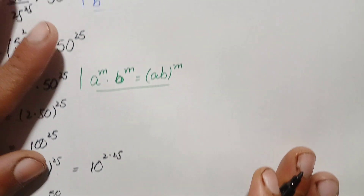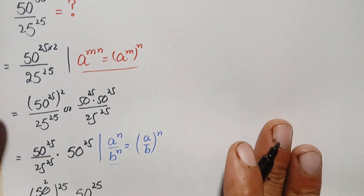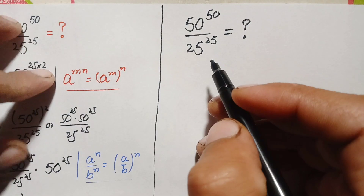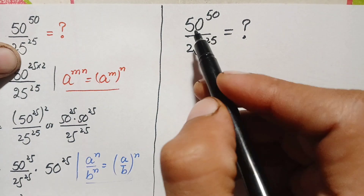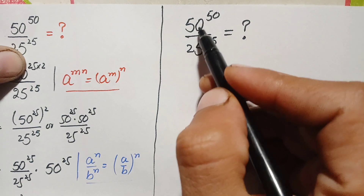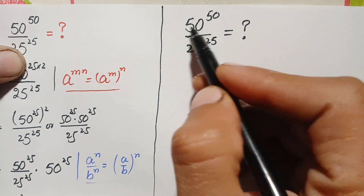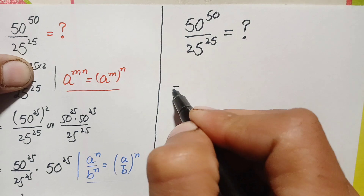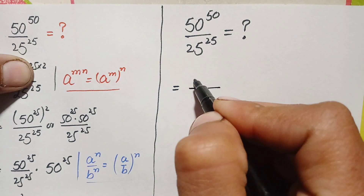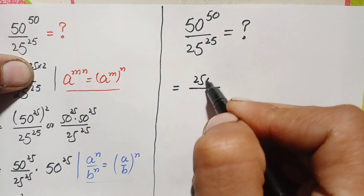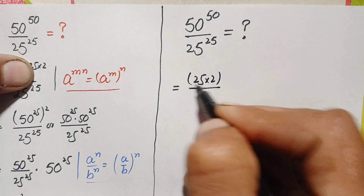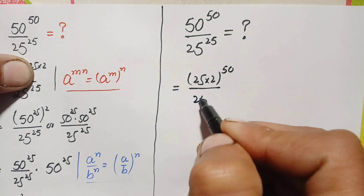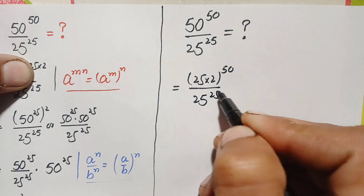Now we solve this problem using the second method. In the second method we will try to make the bases the same. For that we factorize the base 50 as 25 times 2. So this becomes 25 times 2, raised to power 50, divided by 25 raised to power 25.